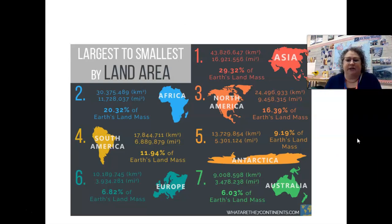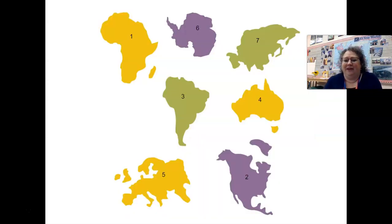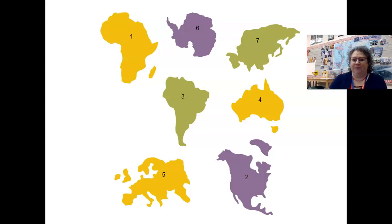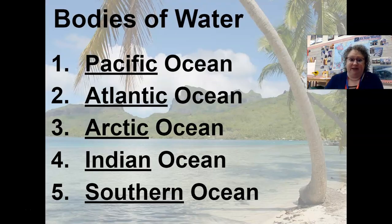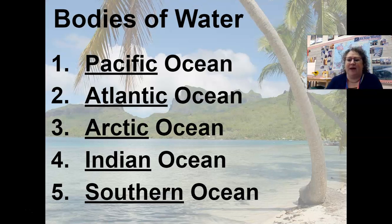When we look at land area, Asia is the largest and the smallest is Australia, though Australia and Europe aren't that much different in size. Looking at a labeled diagram: number one is Africa, number two is North America, number three is South America, number four is Australia, number five is Europe, number six is Antarctica, and number seven is Asia. For bodies of water, we have the Pacific, Atlantic, Arctic, Indian, and the most recent ocean — the Southern Ocean, which they decided to start using around 2000 and started showing up on maps more around 2005. If you buy any modern map, whether or not the Southern Ocean is labeled is a way to tell the date on a map.